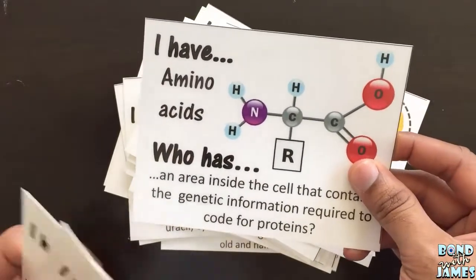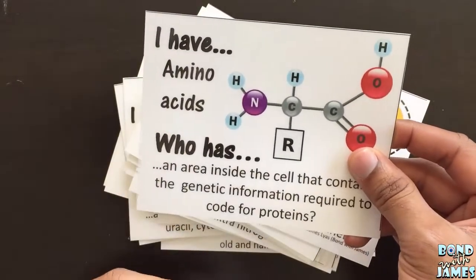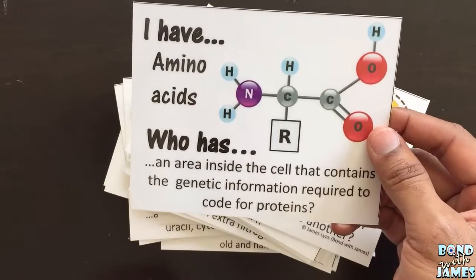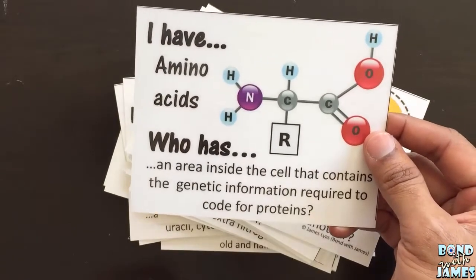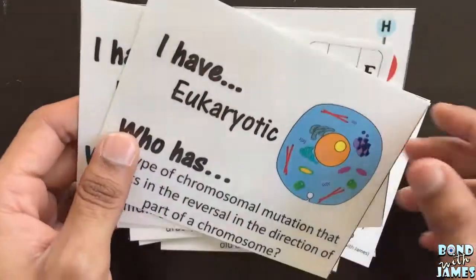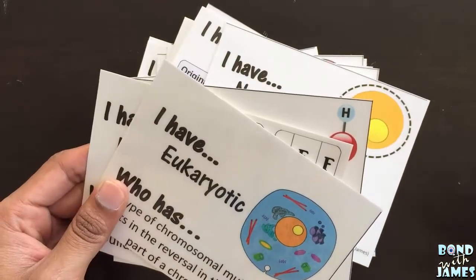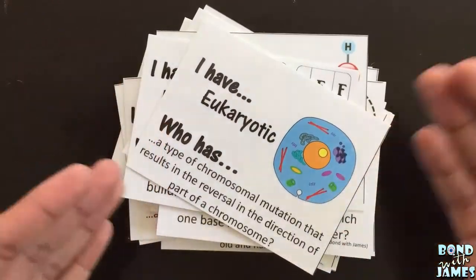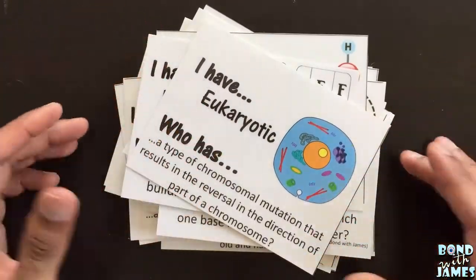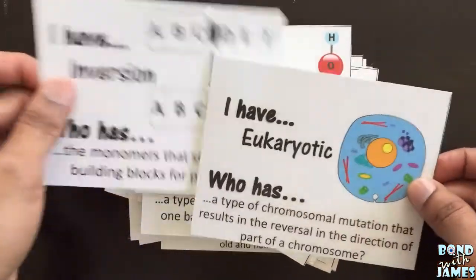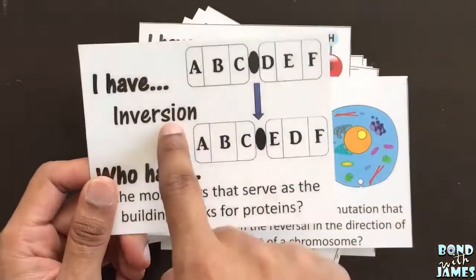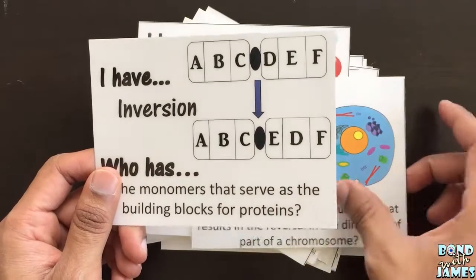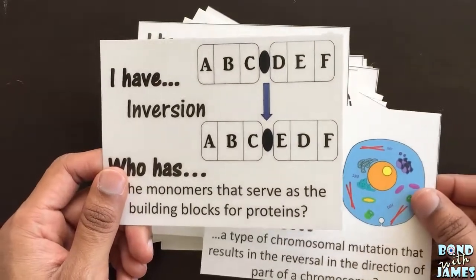I have amino acids. And then that student would read: 'Who has an area inside the cell that contains genetic information required to code for proteins?' And then students, based on their understanding of the vocabulary terms, would continue going around and around until they come back to the card that started off the game. And that is when the game ends.